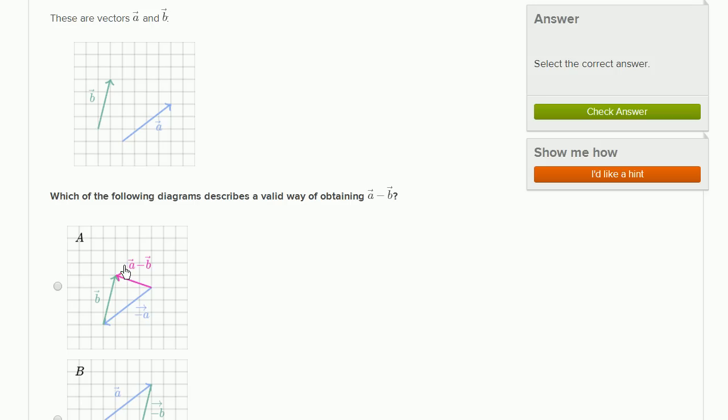So this one right over here is not right. If we swap the signs, if this was a negative, if we put negative a plus b, then we'd say OK, this is accurate. But they want us to figure out valid ways of obtaining a minus b. And this isn't that. This is b minus a.